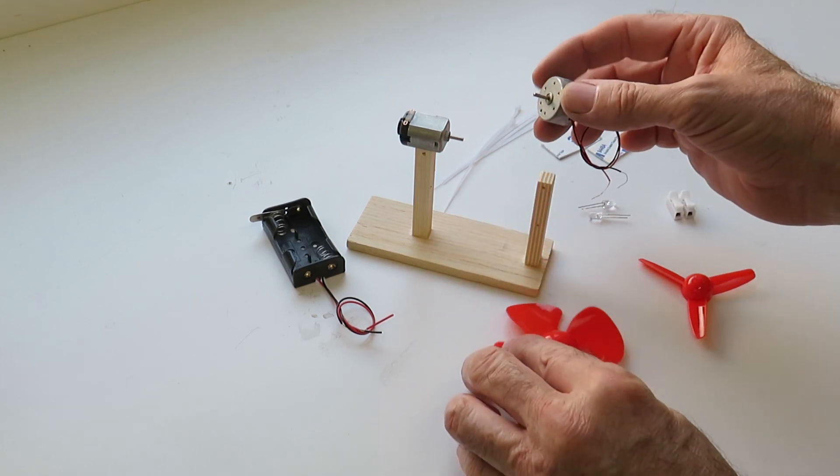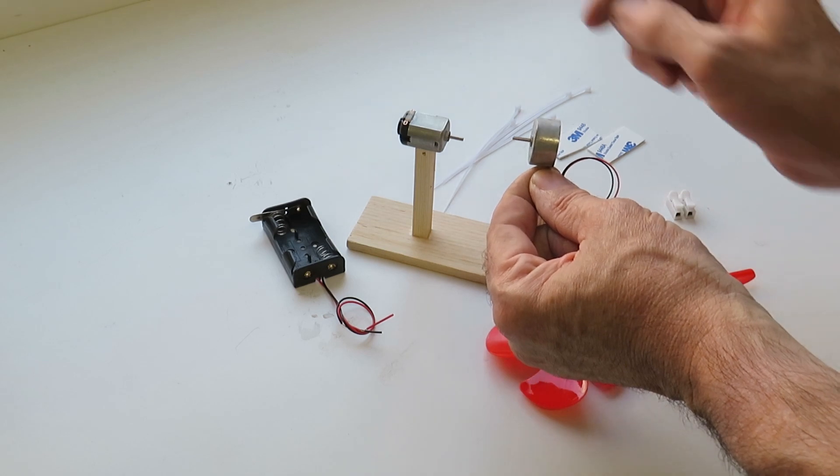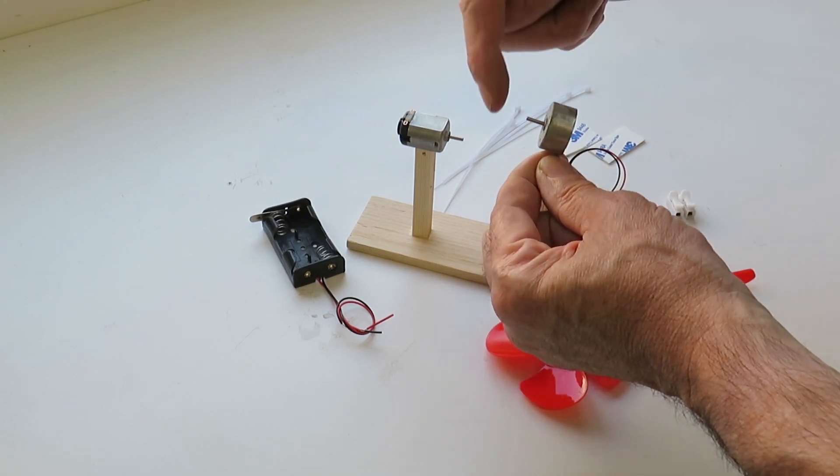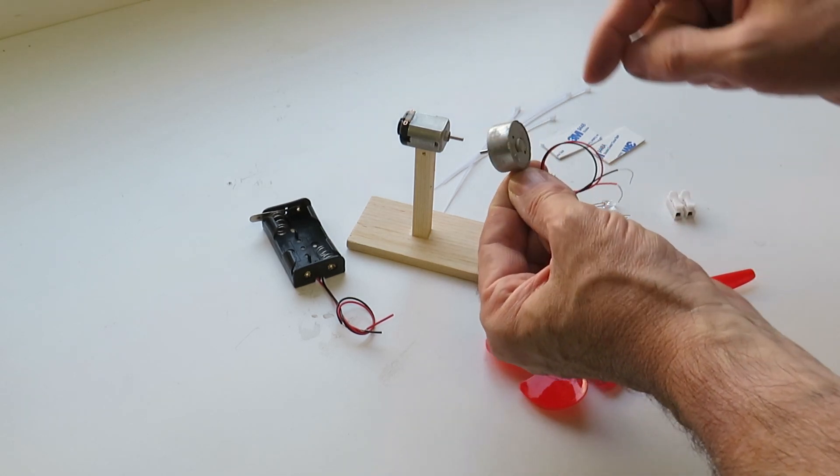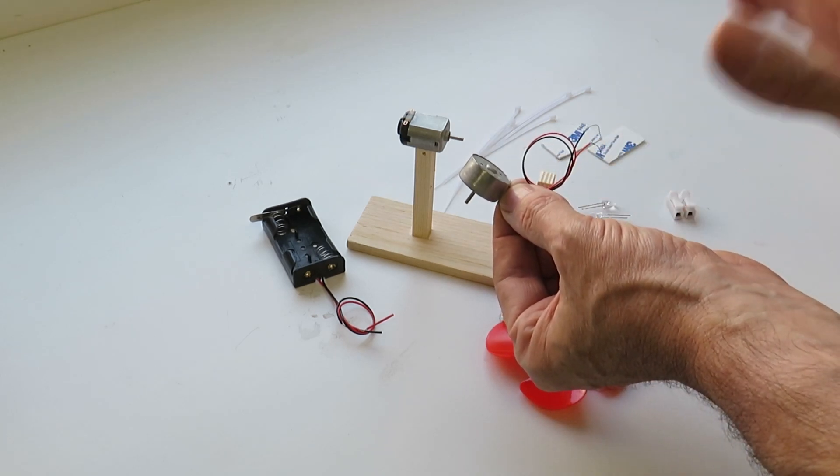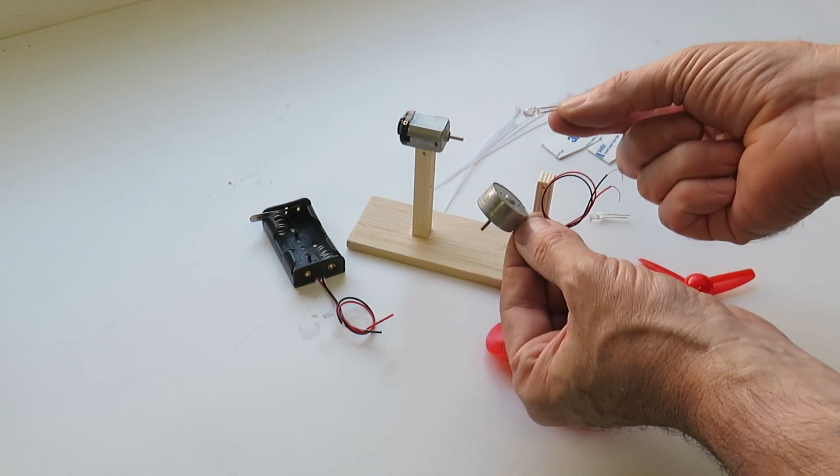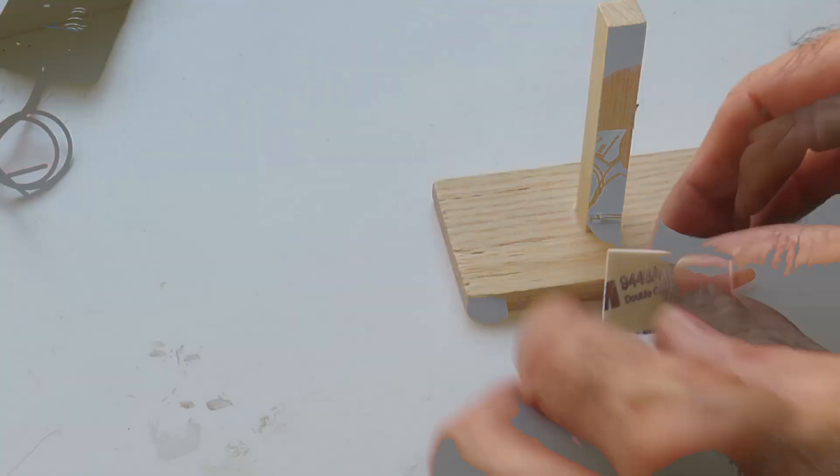Now this motor is called a generator because this motor works almost in reverse to the way this one works. Simply turning this rotor here will actually give us power out on these two leads. It's only a very small amount of power and it's enough hopefully to light up a small LED.